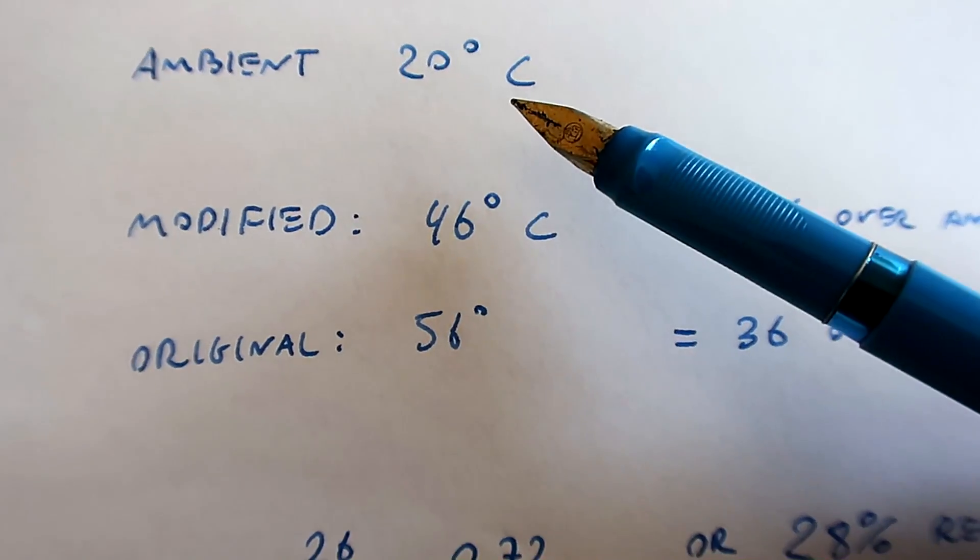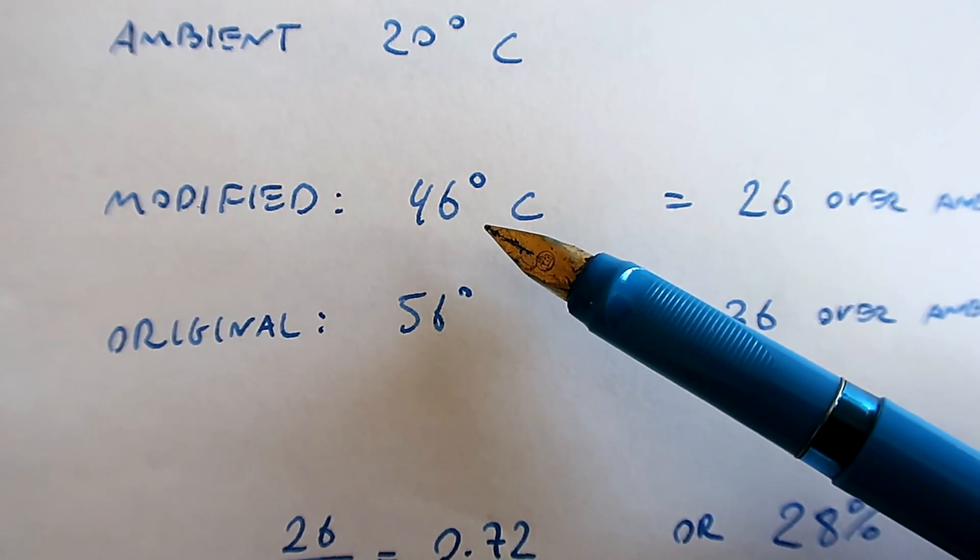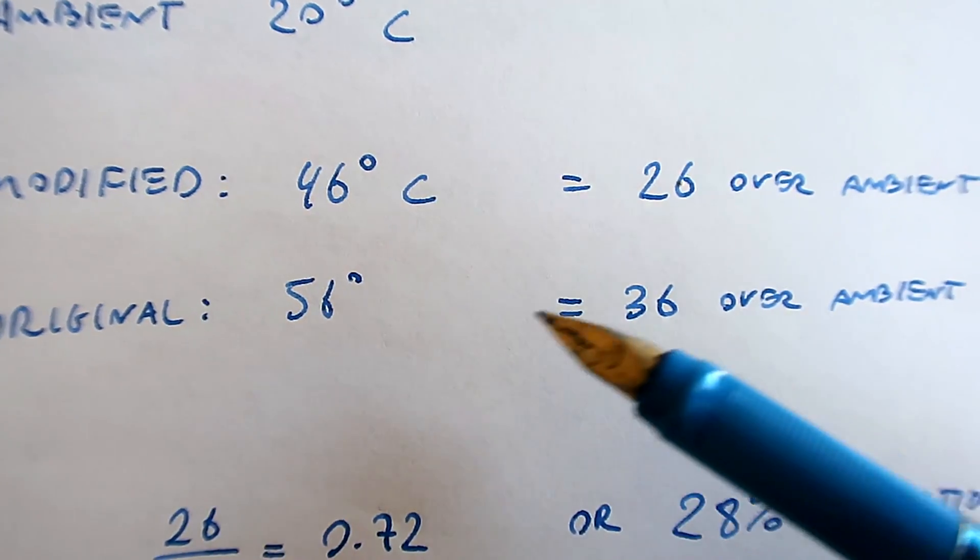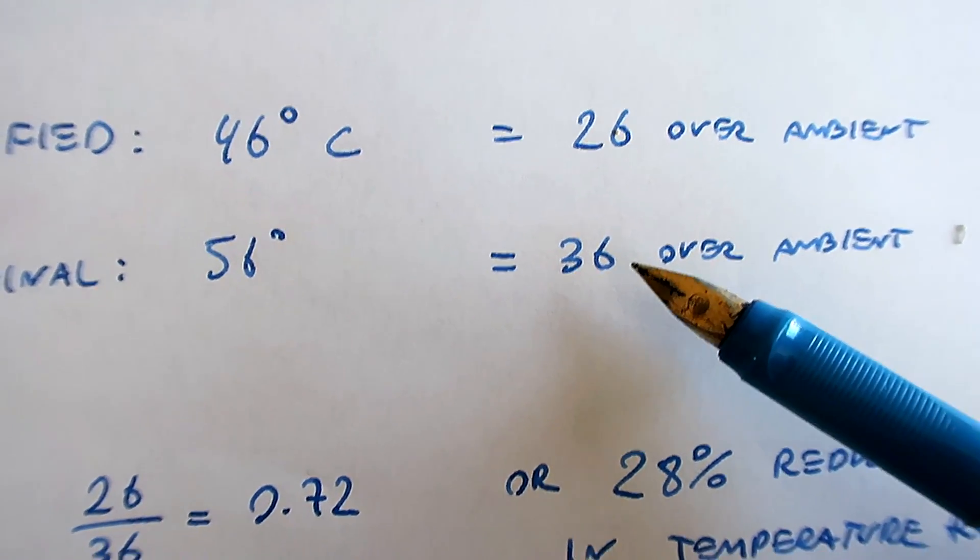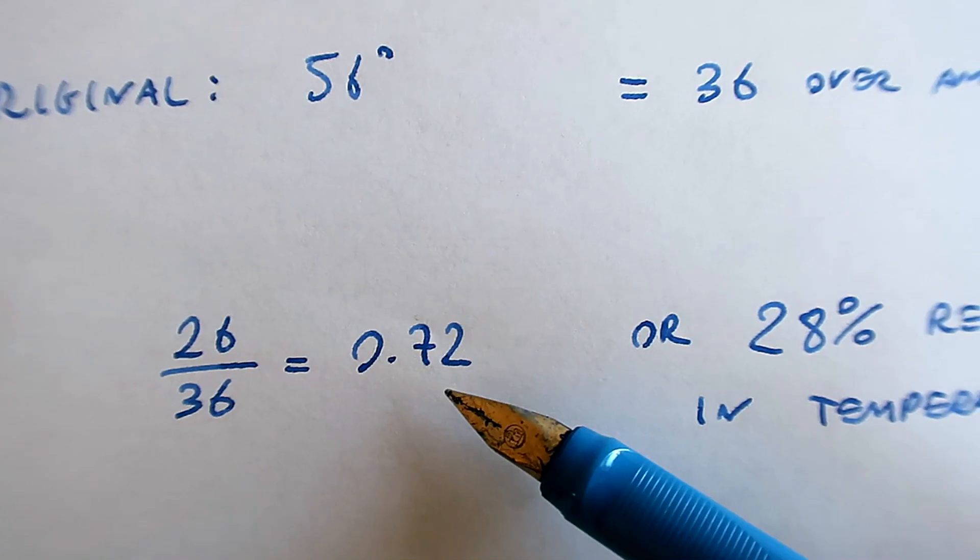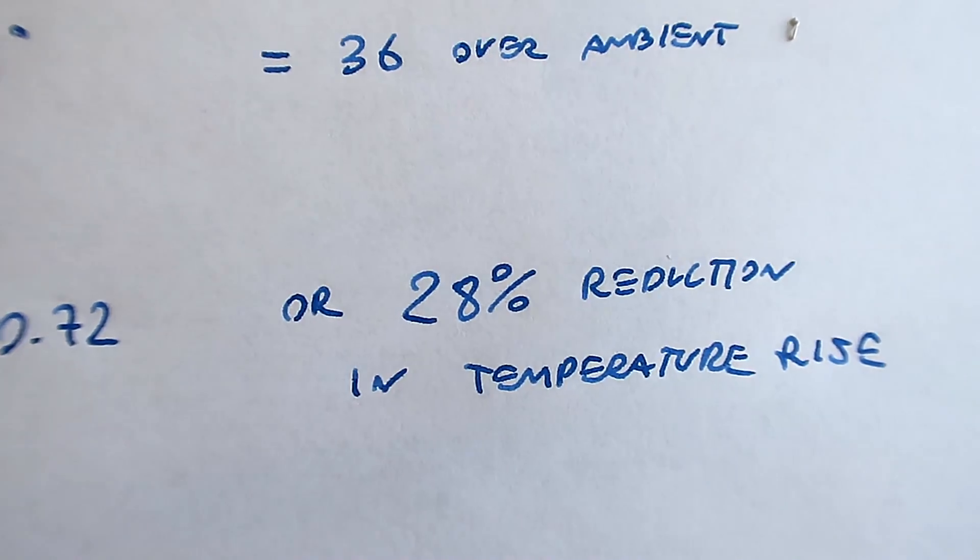With ambient at 20 degrees, the modified one at 46 degrees and unmodified at 56 degrees, we have a 26 degree rise versus 36 degree rise, or 0.72 times as much, or a 28 percent reduction in temperature rise.